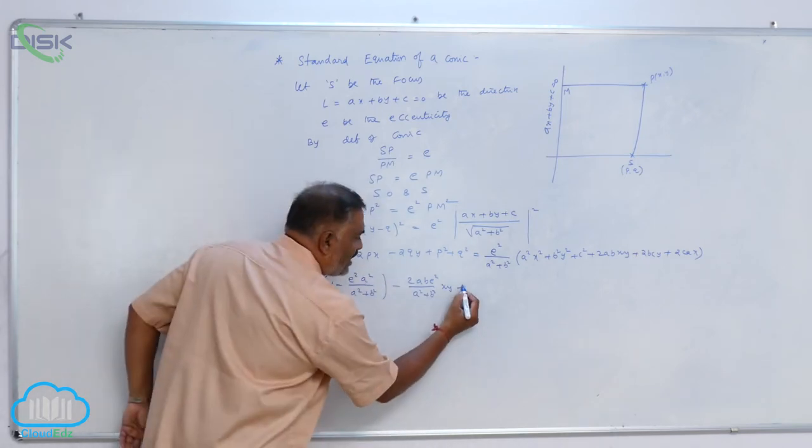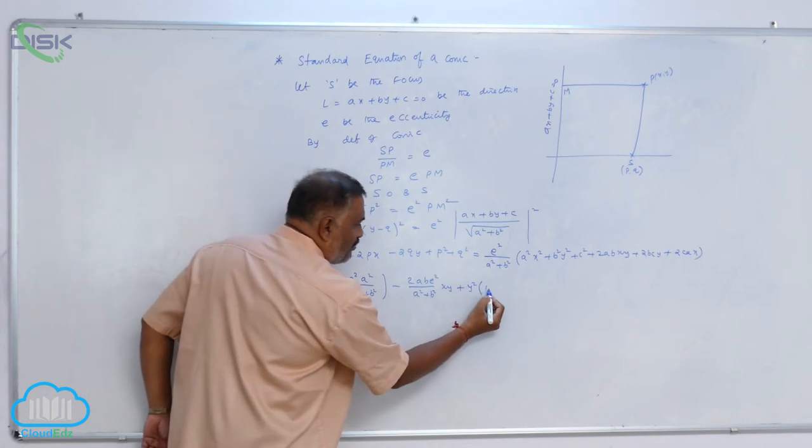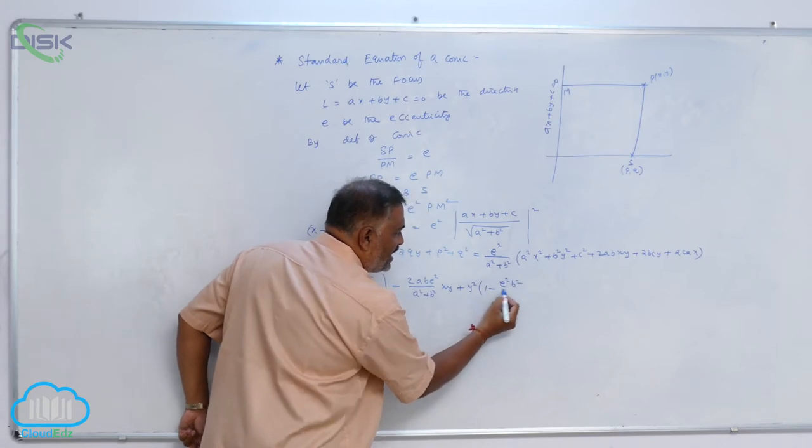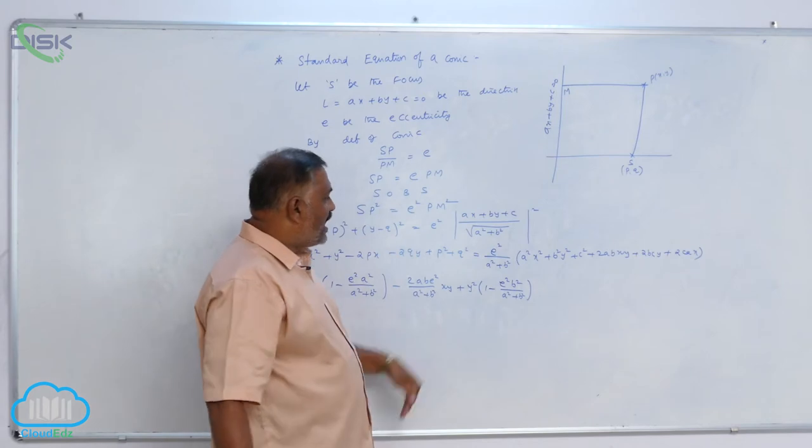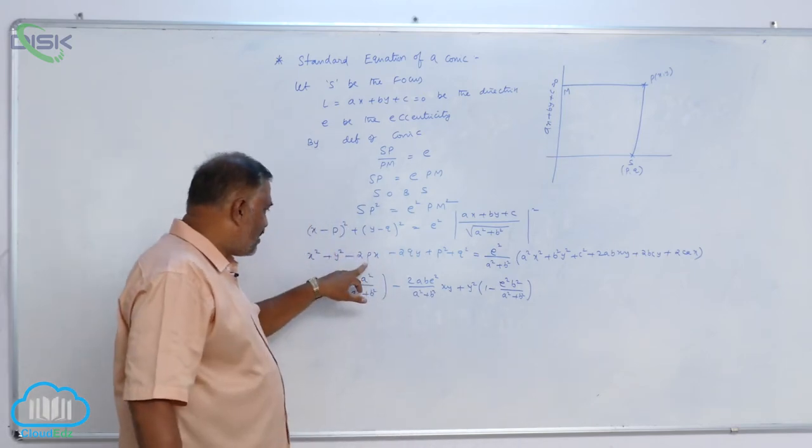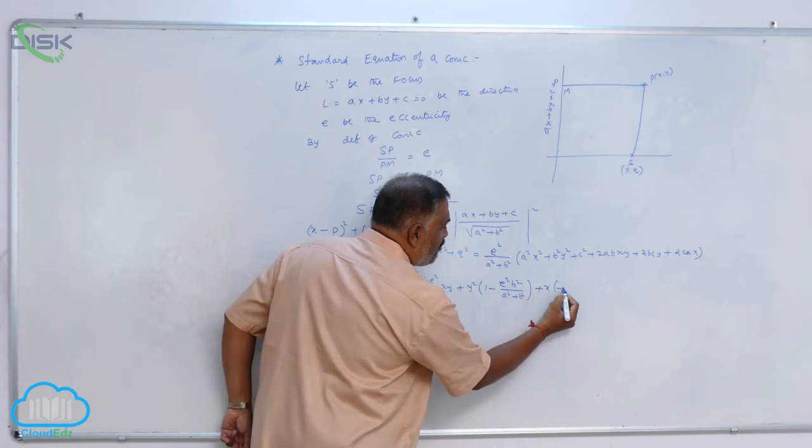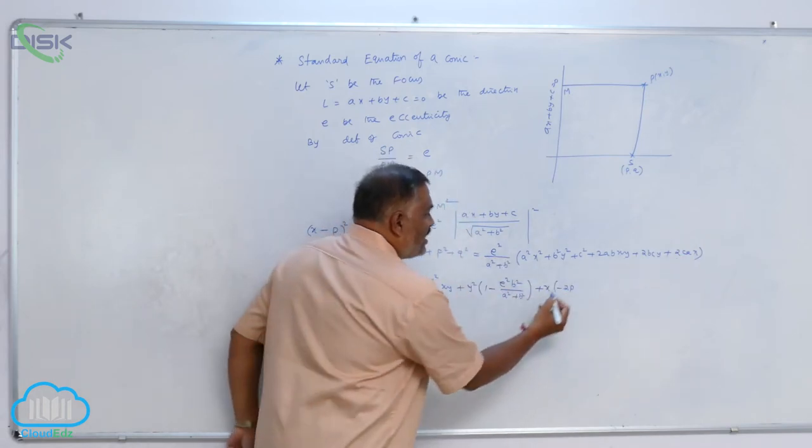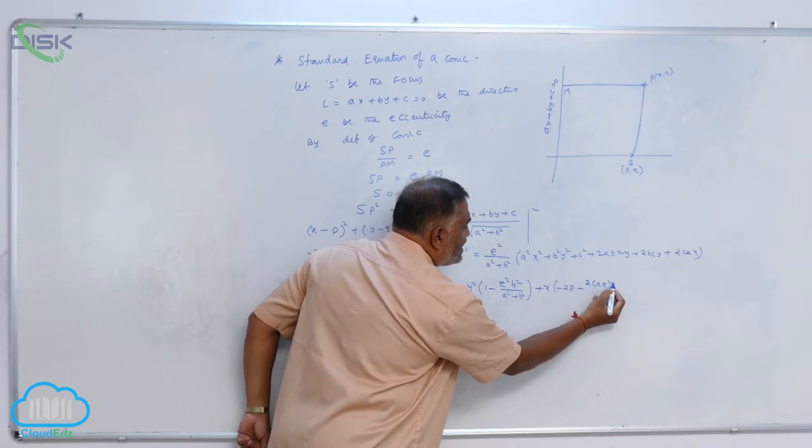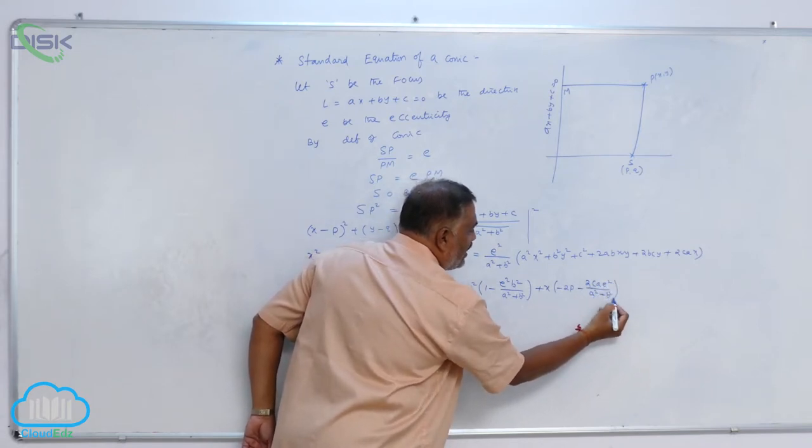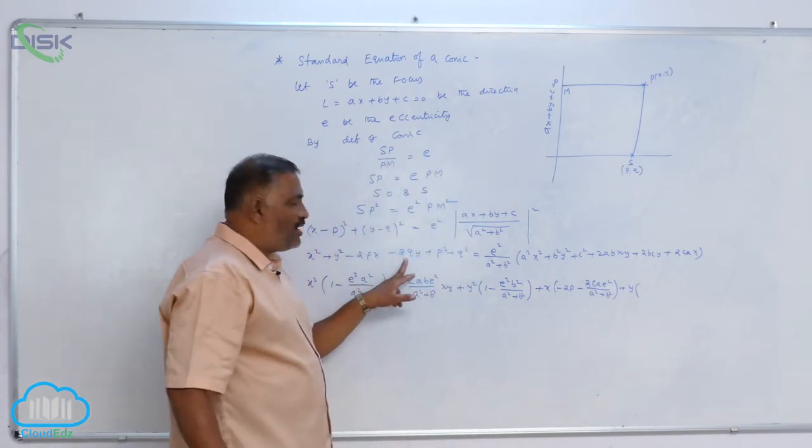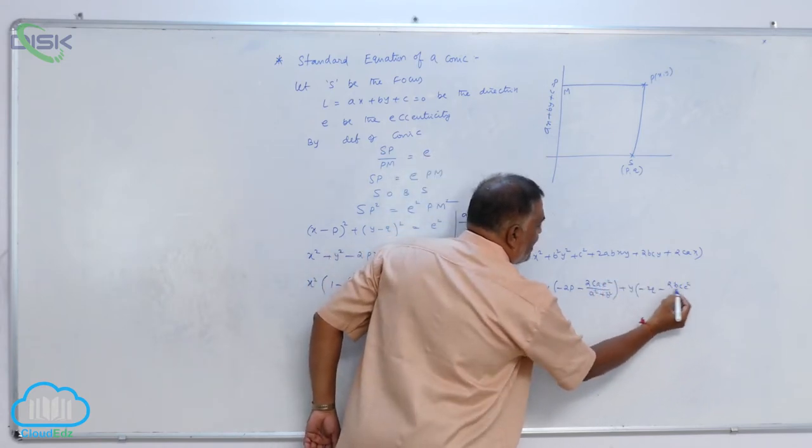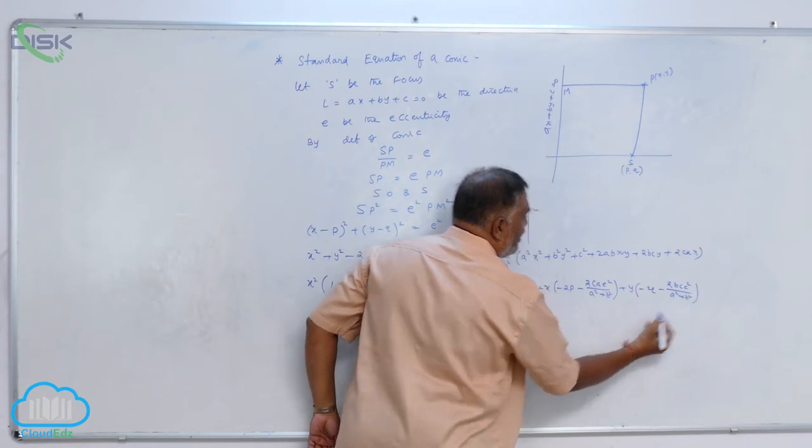Again, Y square term is there. Take Y square common, this is 1 minus. Here, Y square term is E square B square divided by (A square plus B square). Again, now X term. You can see X term is here plus X into minus 2P LHS part. RHS part X term is here, that is minus 2CAE square by (A square plus B square). Again, Y term here minus 2Q is there. Again, Y term is minus 2BCE square by (A square plus B square).